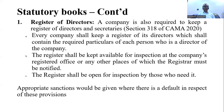Number one is the register of directors. Under Section 318 of CAMA 2020, a company is required to keep a register of directors and secretaries. Each company shall keep a register containing the required particulars of each person who is a director of the company. The register shall be kept available for inspection at the company's registered office or any other notified place.